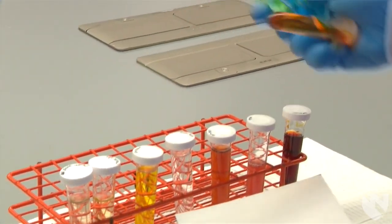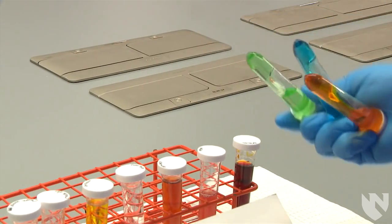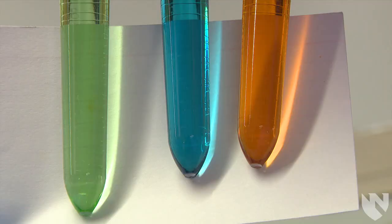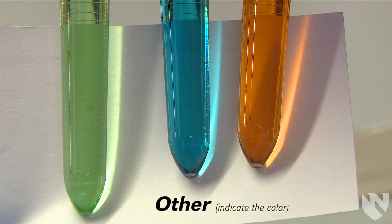Sometimes you may see urines with shades of green, blue, or orange. If the color you see is not on your report form, then you can report the urine as other and indicate the color.